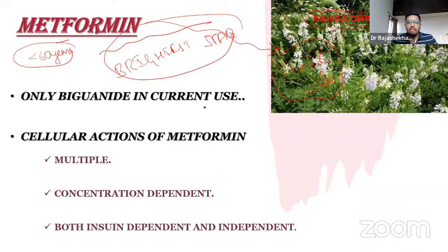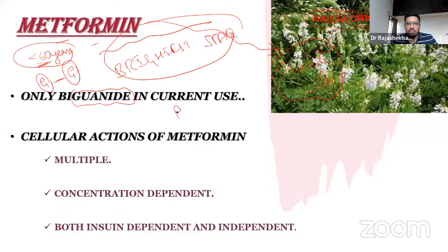Metformin is a biguanide — a combination of two molecules of guanidine. The hypoglycemic effect of guanidine was known about 100 years ago. Other biguanides like phenformin and buformin were withdrawn due to their extreme risk of causing lactic acidosis.